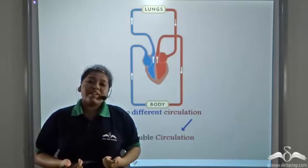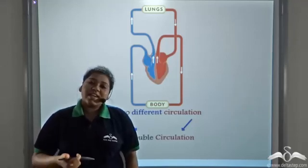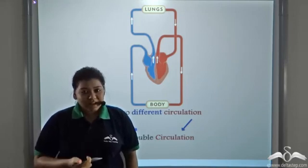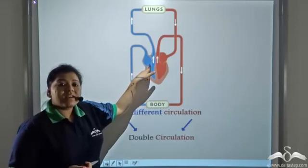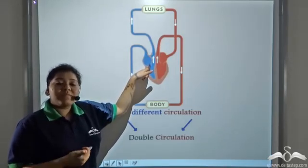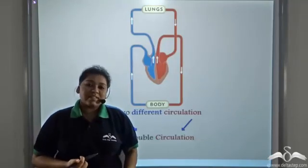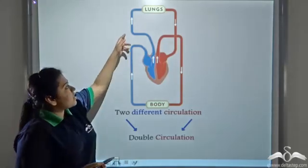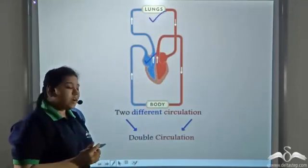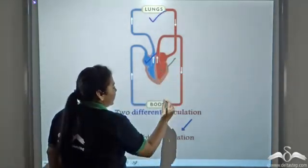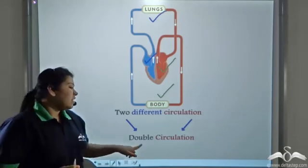Now cellular respiration takes place in the body cells, and during this cellular respiration, carbon dioxide is generated. So this carbon dioxide rich blood is then taken from the body cells via blood vessels to the heart. And the heart again pumps this deoxygenated or carbon dioxide rich blood to the lungs. The lung eliminates the carbon dioxide from the body. So there are two circulations going on — one involving the heart and the lungs and the other involving the heart and the body. Since there are two different circulations, we call this double circulation.